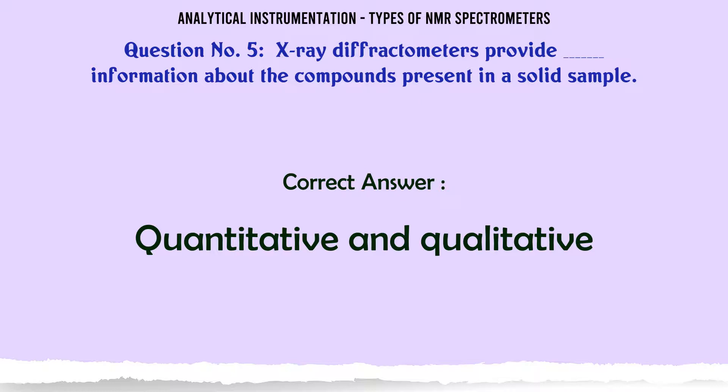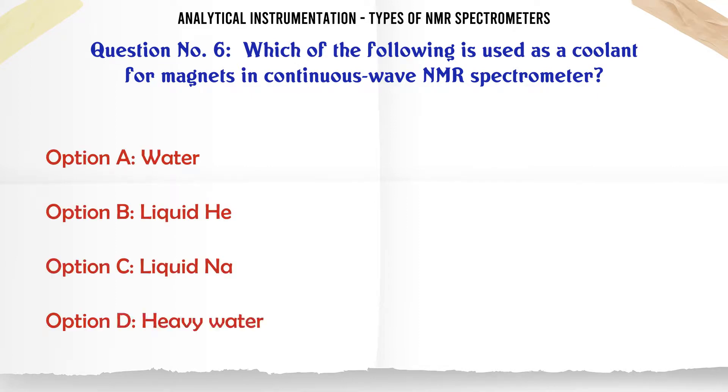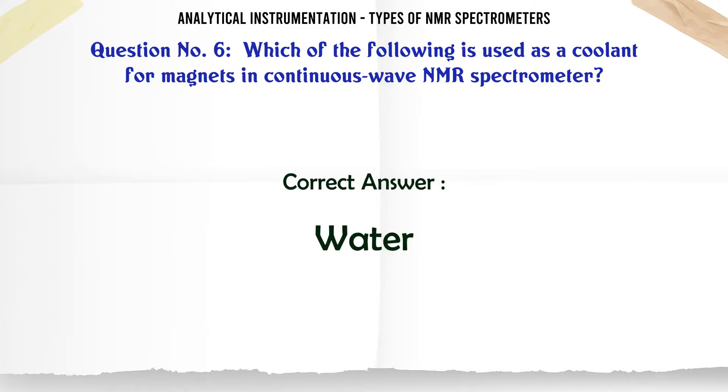Quantitative and Qualitative. Which of the following is used as a coolant for magnets in continuous wave NMR spectrometer? A. Water. B. Liquid He. C. Liquid Na. D. Heavy Water. The correct answer is Water.